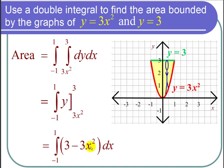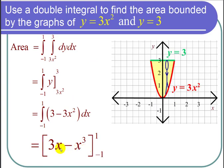And now I integrate that dx. The integral of 3 is 3x and the integral of 3x squared is x cubed. So I get 3x minus x cubed from negative 1 to 1. And now I just plug in.